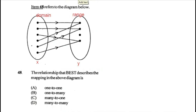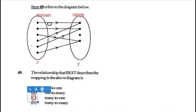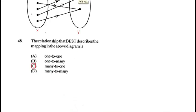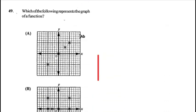Question 48: the relationship that best describes the mapping in the diagram. We're looking at the domain and range — when y values have more than one x value mapped onto them it is described as many-to-one, which is C. A one-to-one function maps one x value directly onto one y value, but it cannot be a function if more than one arrow comes from a domain element.